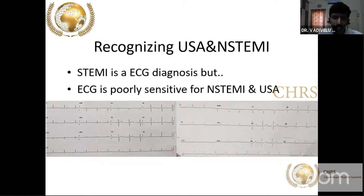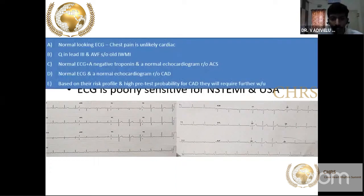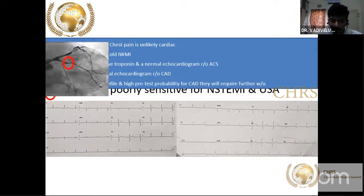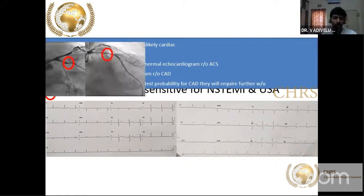Sometimes patients with non-ST elevation acute coronary syndrome may present with a normal ECG but very significant angina. That is why the latest ECG definitions now incorporate biomarkers. In addition to ECG, you have to corroborate with echo and biomarkers before labeling a patient as having a normal ECG or non-cardiac chest pain.